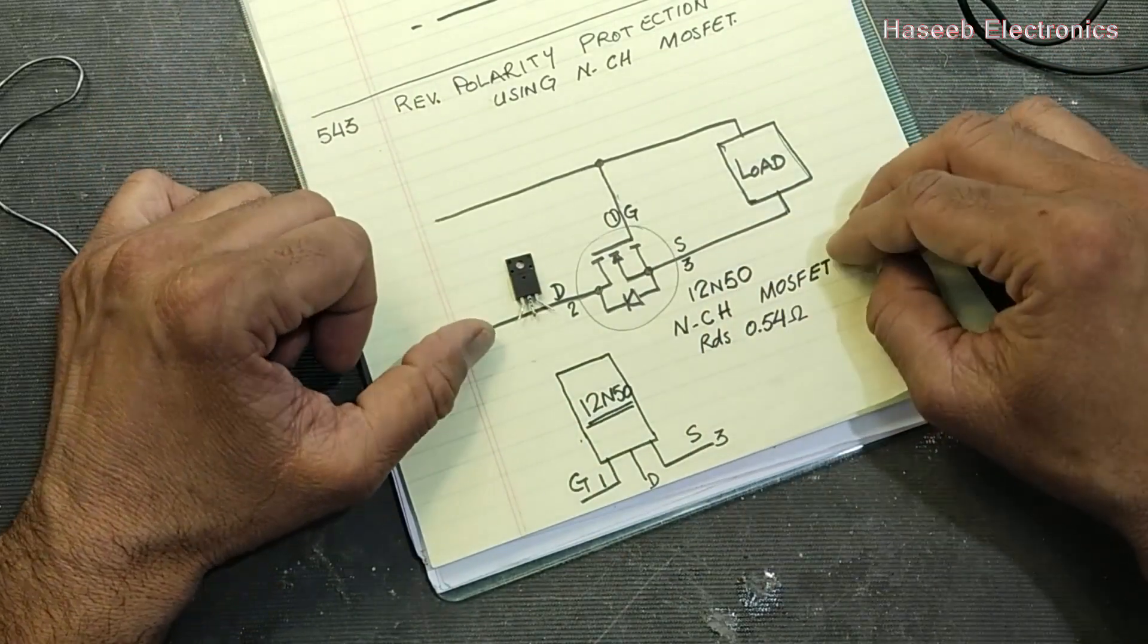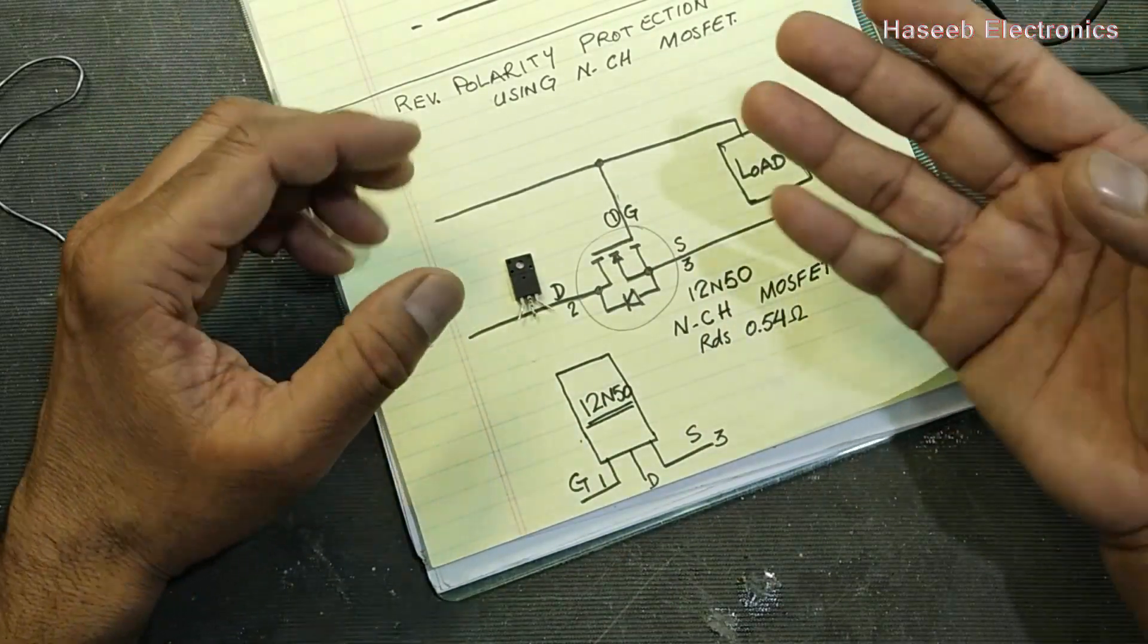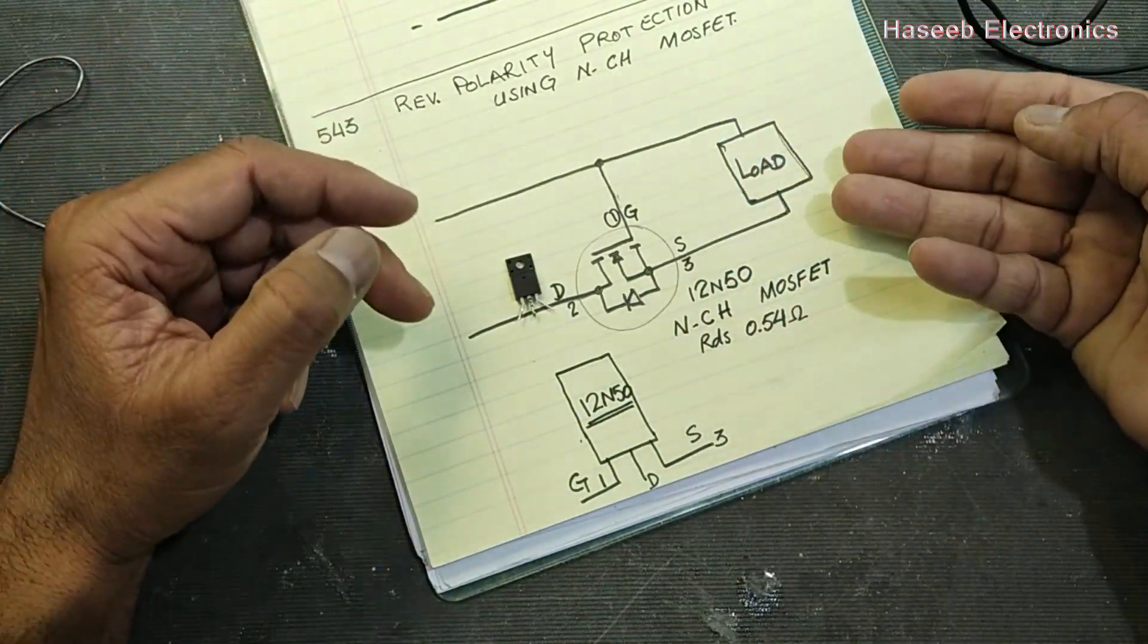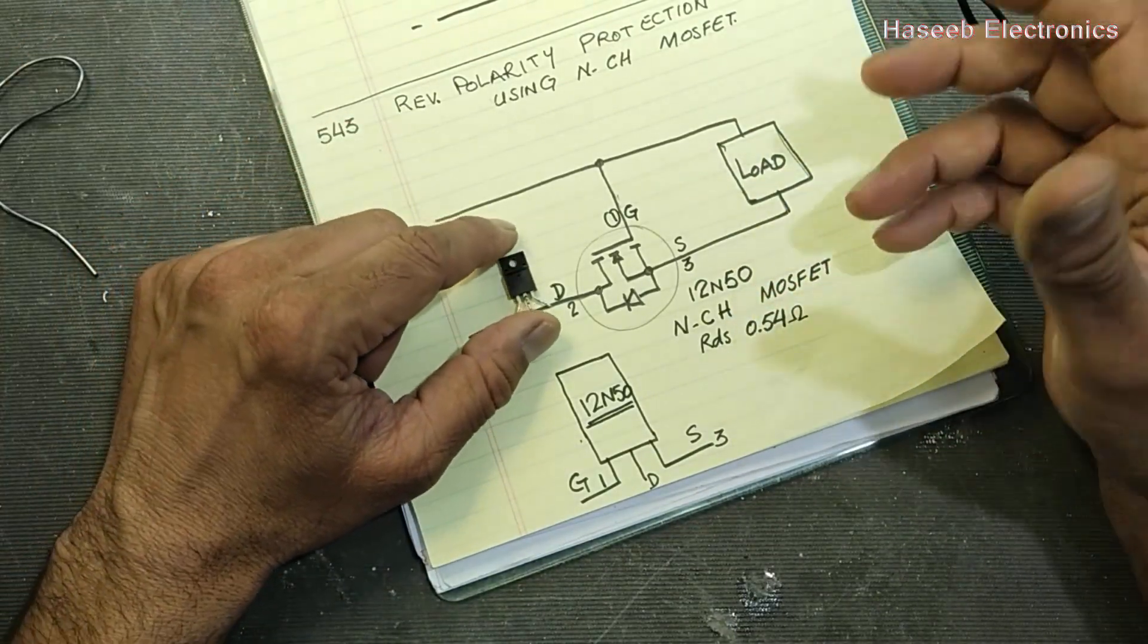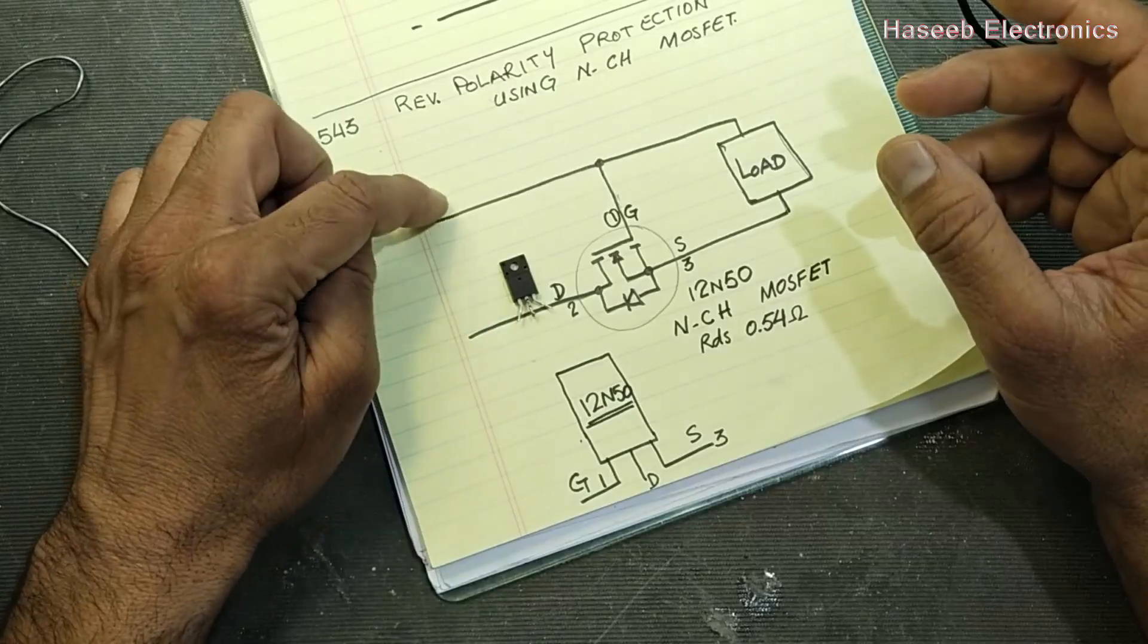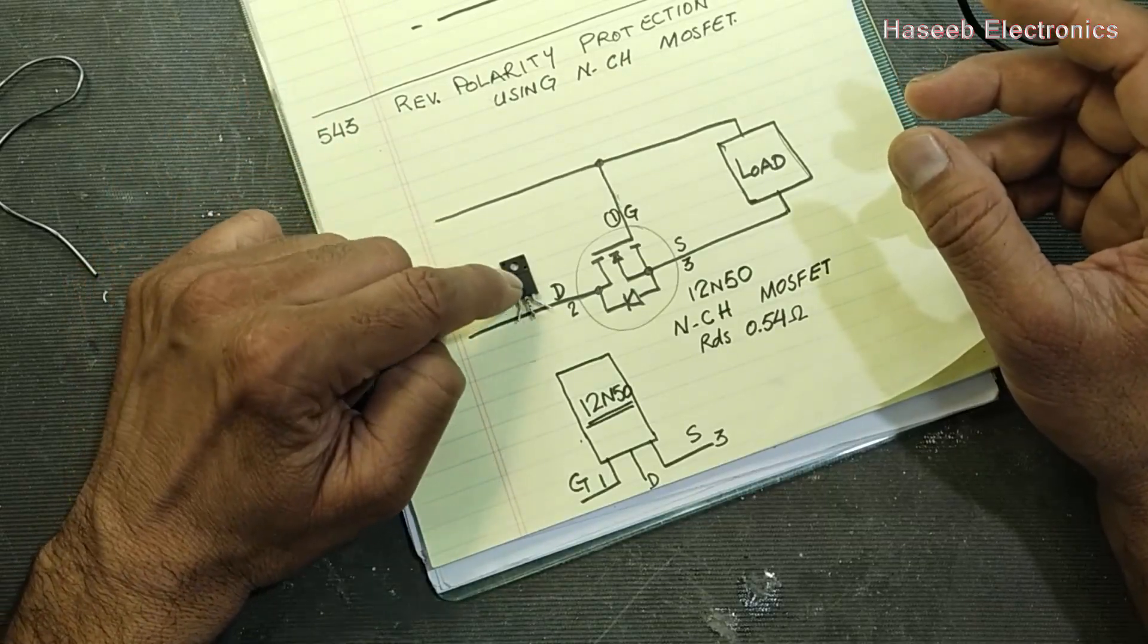For normal circuits, N-channel is suitable because you don't have to purchase a new P-channel MOSFET. But for microcontrollers and some special devices, we need to control the positive line, in that case we need to use a P-channel MOSFET.